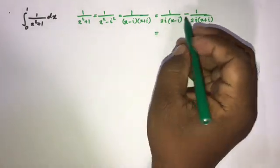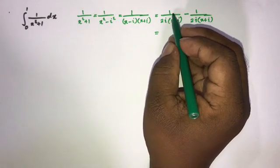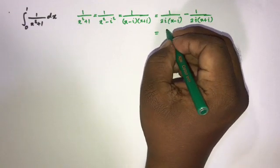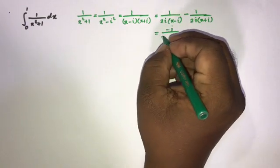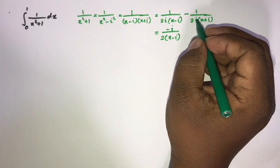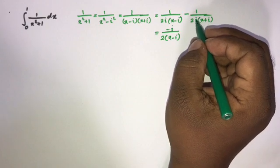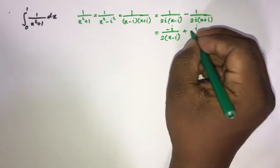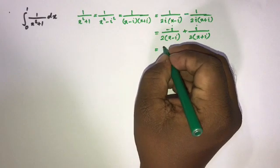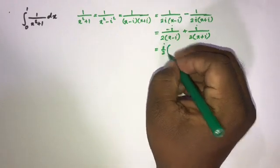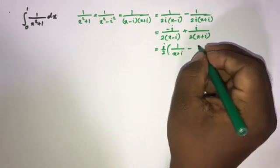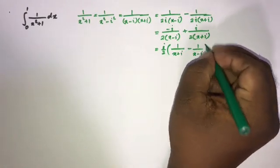Now I am going to multiply both numerator and denominator by minus i. Since i squared equals minus 1, the first term becomes minus i over 2 times (x minus i), and the second term becomes plus i over 2 times (x plus i). Taking i over 2 as a common factor gives i over 2 times [1 over (x plus i) minus 1 over (x minus i)].